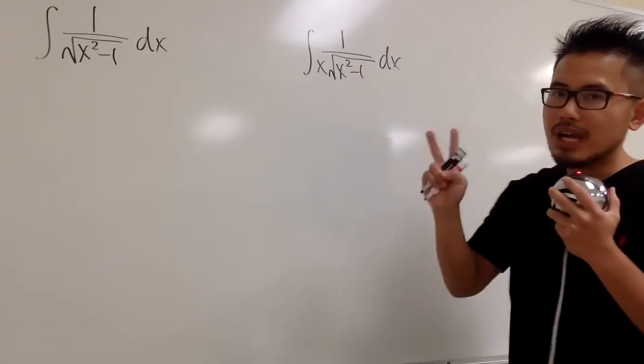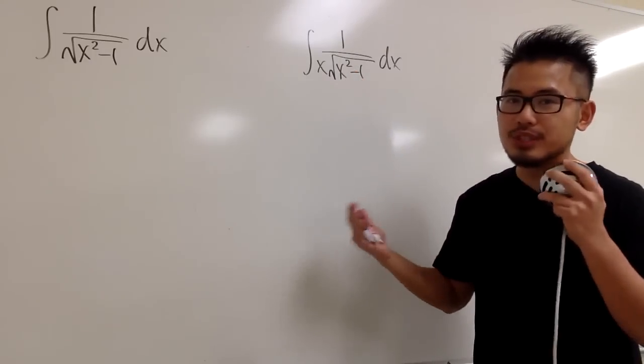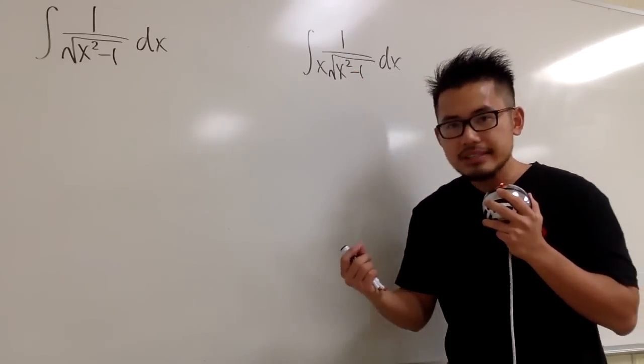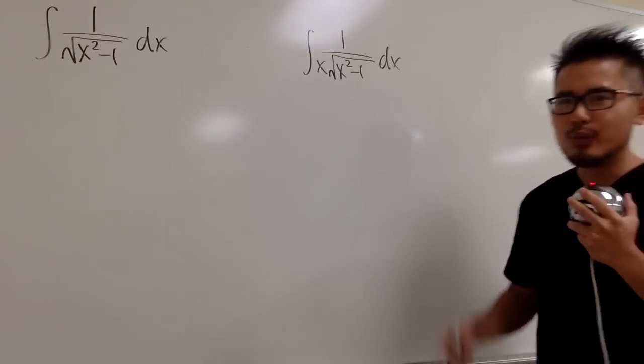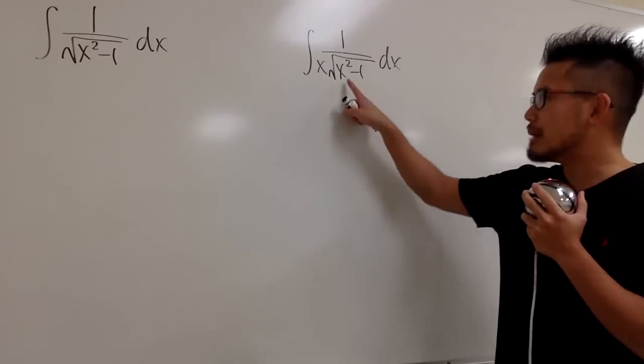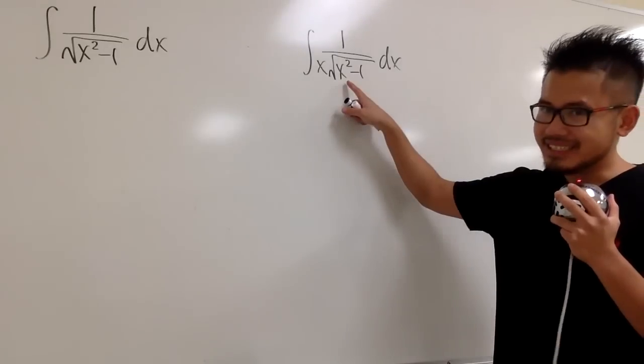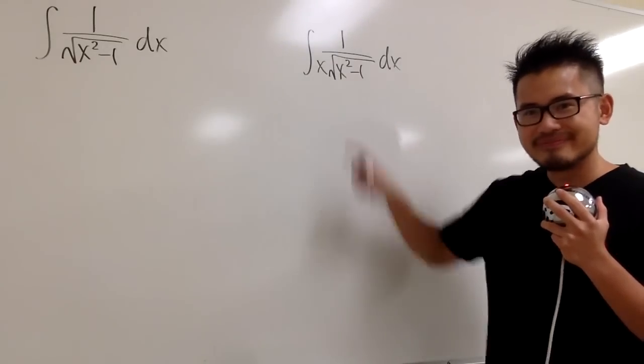When we have x squared minus 1, we have only two terms. In the square root, that doesn't really do us any good. The idea is that we want to somehow complete the square. It's not even possible. We only have two terms. It's not possible in the x world. It is in the other world, called the theta world.